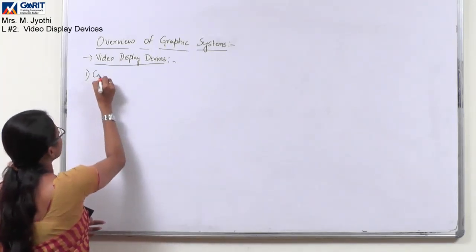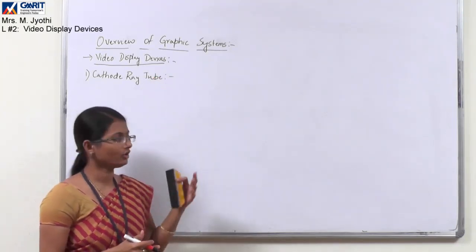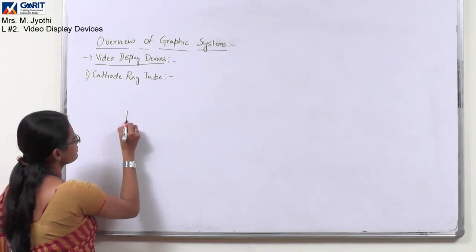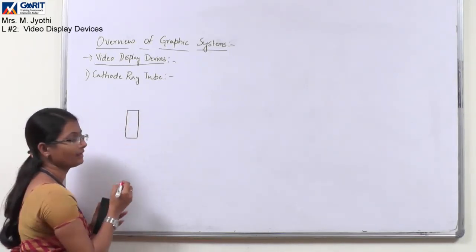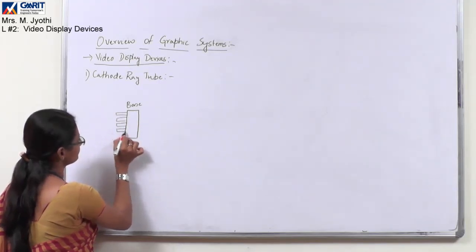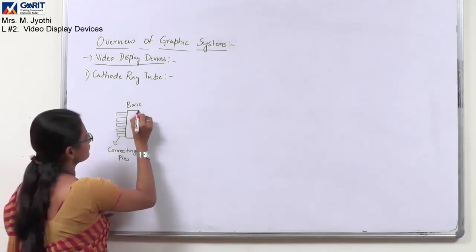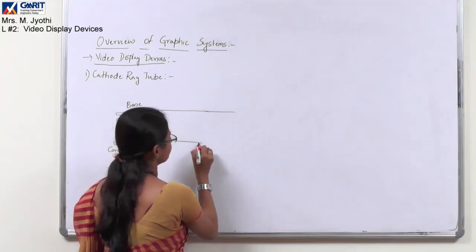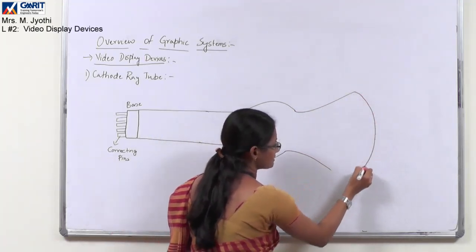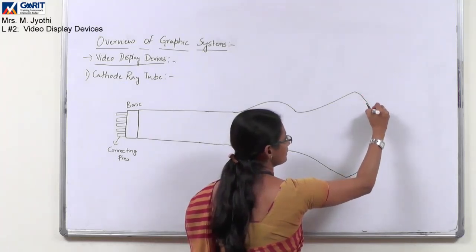CRT stands for Cathode Ray Tube. Now I will be drawing the basic architecture of the cathode ray tube and we will see in depth the working of it. The architecture consists of a base first, with connecting pins connected to it. And this will be our screen, which is coated with phosphor — referred to as a phosphor-coated screen.